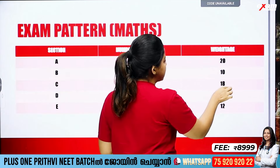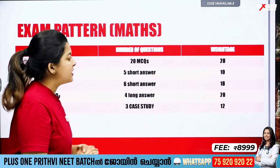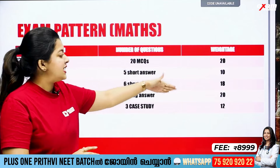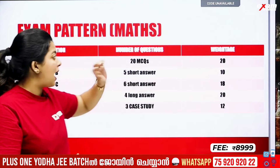The marks distribution: 20, 10, 18, 20, 20. Then 20, 10, 18, 20, 12. There are marks for each section.